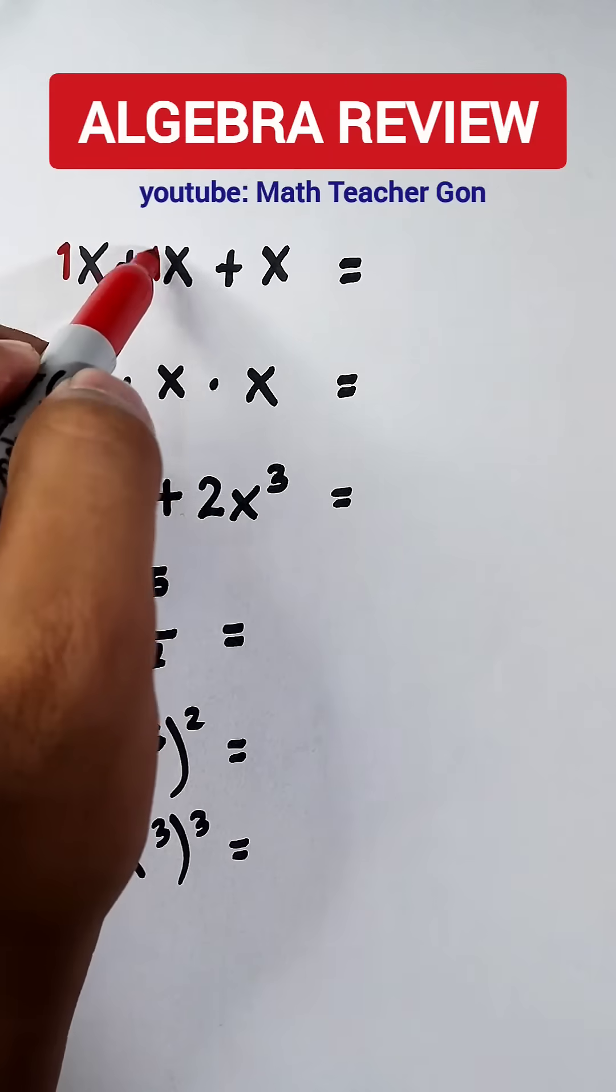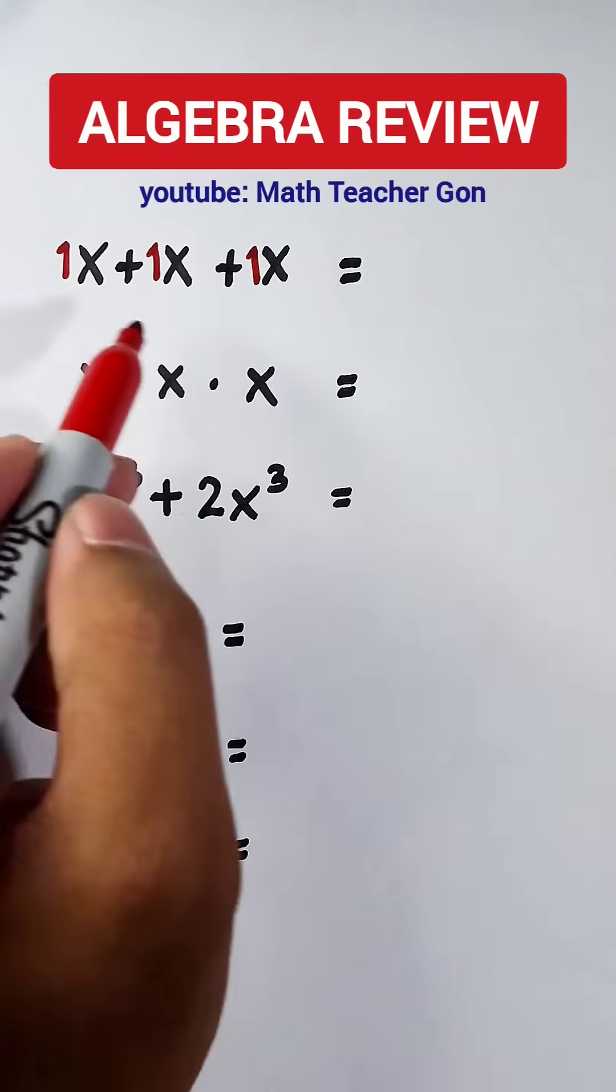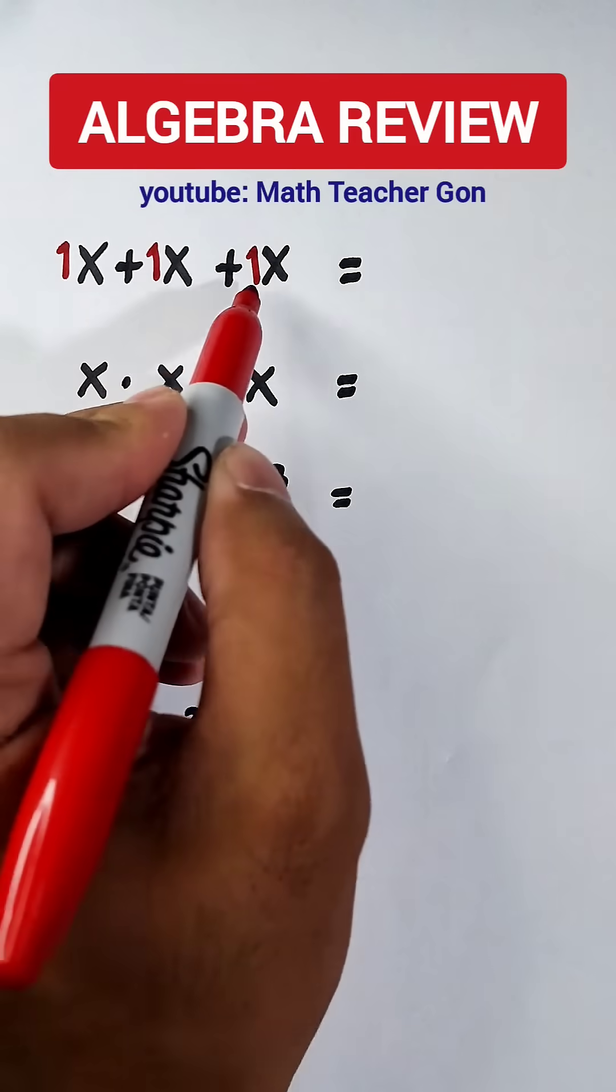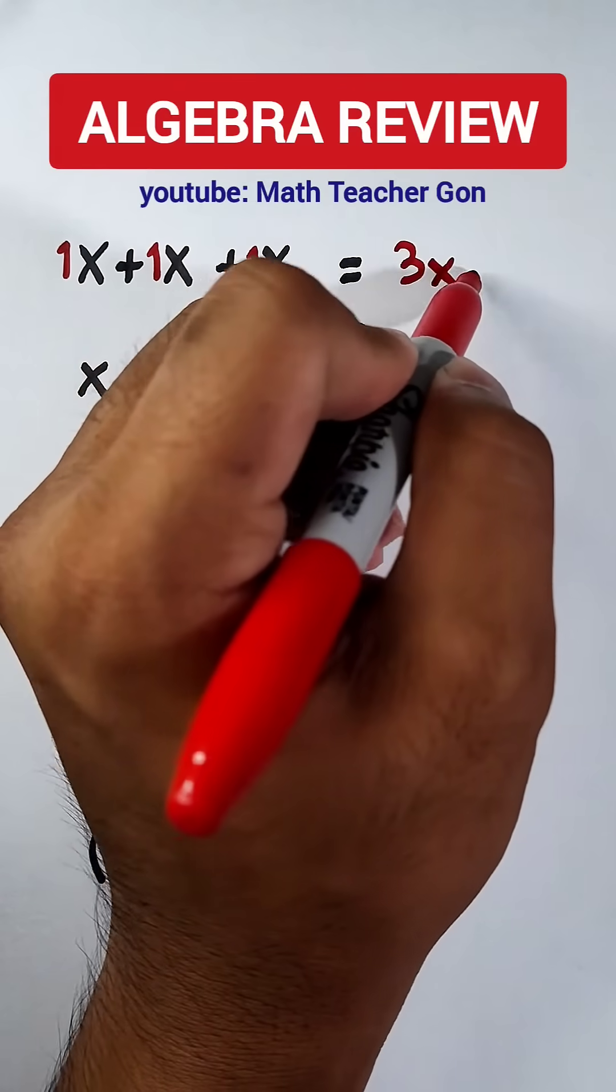Here we have an invisible one, one and one. As you can see, all you need to do is add one plus one plus one, that is three, then copy the variable x. So the answer is 3x.